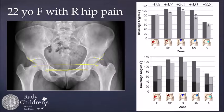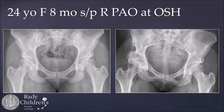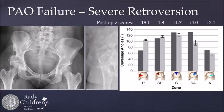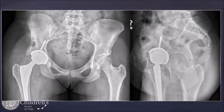Finally, a 24-year-old female who had a PAO performed at an outside hospital with significant retroversion — too much coverage anteriorly and laterally. This is confirmed on the coverage angles with Z-scores of plus 4 in the superior anterior quadrant. You can see her joint space narrowing. She went on to receive a total hip arthroplasty.